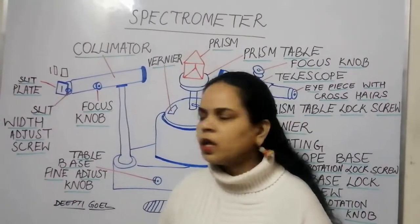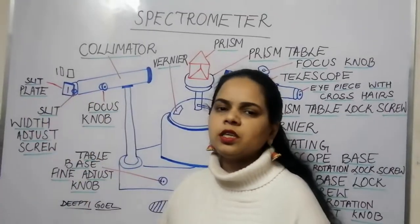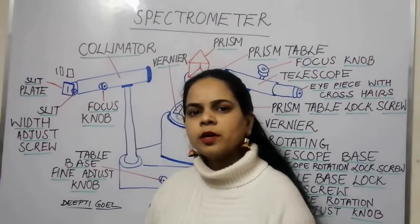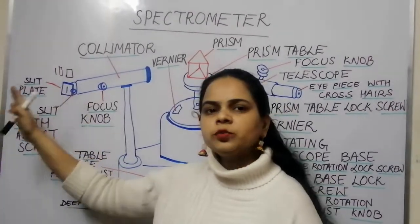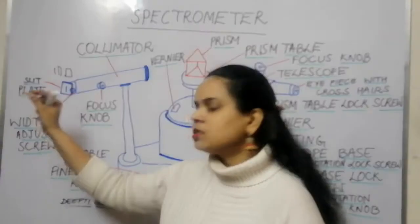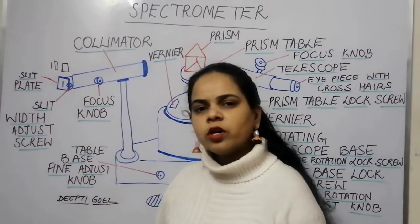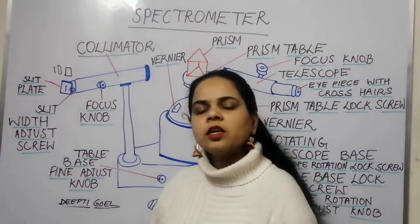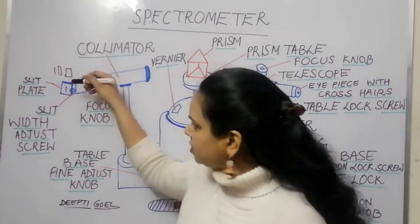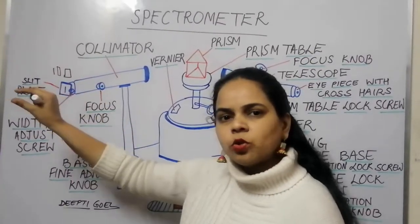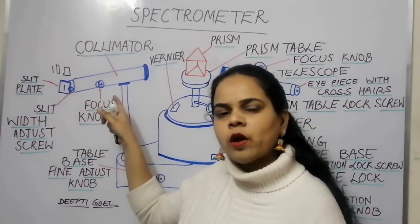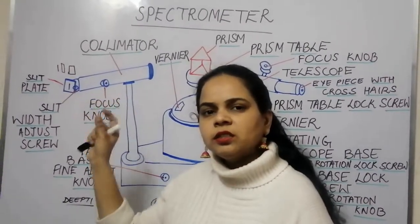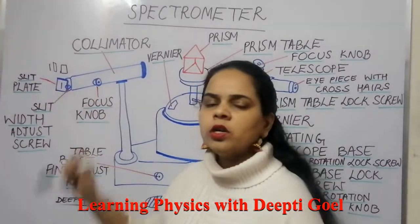The collimator always points towards the source of light, such as a sodium lamp or mercury source. Since the light beam diverges in all directions, the slit plate allows only a narrow, rectangular beam to enter the collimator. The slit width screw adjusts how much beam width is permitted to pass through.